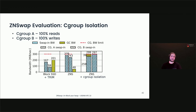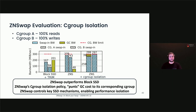In this experiment, we evaluate ZNSwap's ability to isolate the swap performance between tenants. In the same setup as the earlier analysis, C group A performs 100% reads and C group B performs 100% writes, each limited to half of the device's bandwidth. We compare the performance of both C groups in each configuration as well as the bandwidth consumed by garbage collection. ZNSwap exhibits lower garbage collection bandwidth and is therefore able to achieve higher bandwidth for both C groups over the block SSD plus trim. When the C group isolation mechanism is enabled, each C group's swap data is placed into different zones, lowering overall garbage collection bandwidth, and the isolation mechanism attributes garbage collection bandwidth to the C group that causes it, which is accounted for in the per-C group bandwidth throttle controls. Both C groups are able to achieve their bandwidth limits.